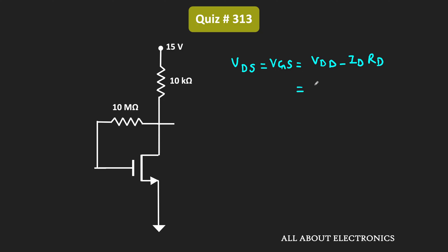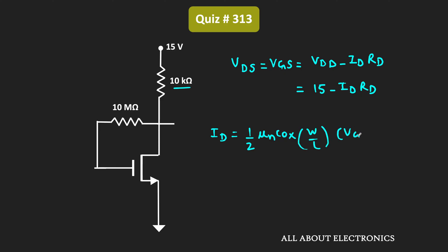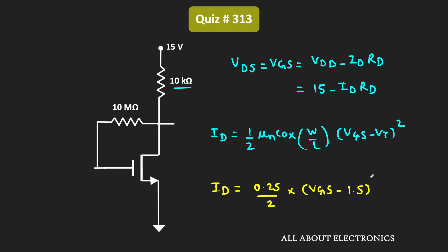In this case that is equal to 15 minus Id times Rd, where Rd is equal to 10 kilo Ohm. Also, when the MOSFET is operating in the saturation region, the drain current Id can be given as 0.5 times µn times Cox times W/L times (VGS - Vt) squared. We have already been given the values of the device parameters as well as the threshold voltage. So in saturation, the drain current Id is equal to (0.25 mA/V²) / 2 times (VGS - 1.5)².